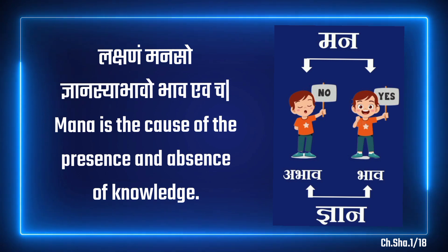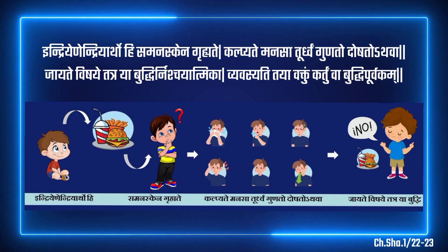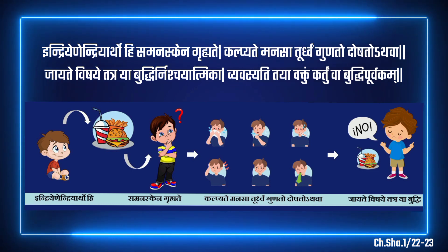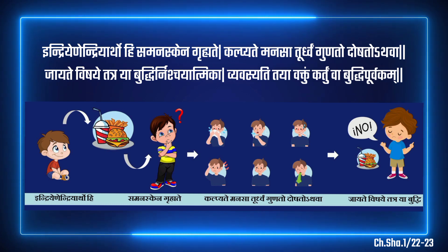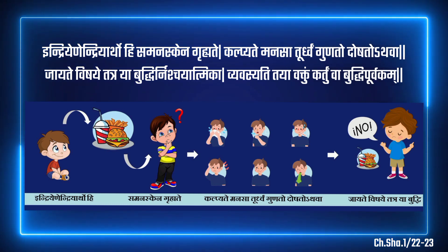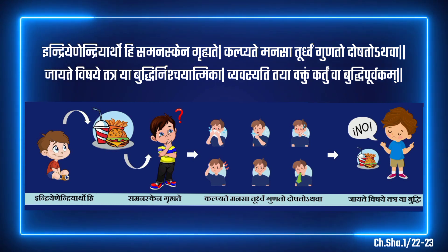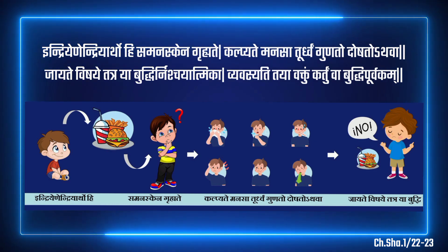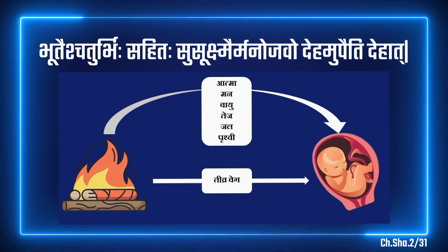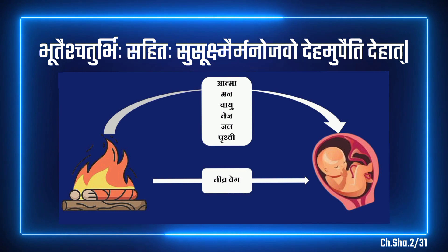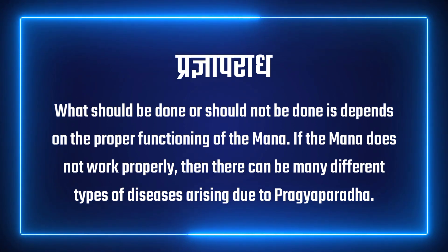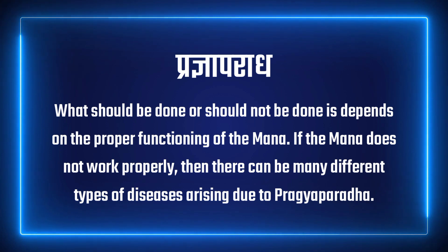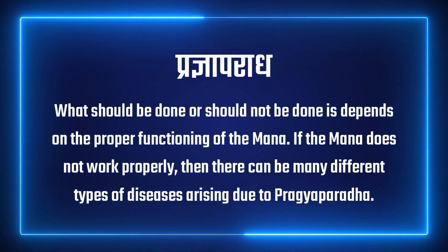Maharshi Charak wrote: Lakshanam Manasog Gyanasya Bhava Bhava Evacha. Maharshi Charak also describes the functioning of Man by saying that objects are perceived with the help of Indriya and Man. This perception is purely mental in the beginning, while the practical advantages or disadvantages are ascertained thereafter. The intellect, which determines specific properties of the object, impels the individual to speak or act intelligently. The soul along with Man and four subtle bhoot transmigrate from one body to another according to past deeds. The determination of what should or should not be done depends on the proper functioning of the Man. If the Man does not work properly, many different types of diseases can arise due to Pragyaparadha.